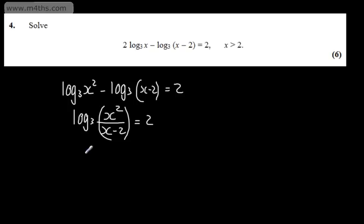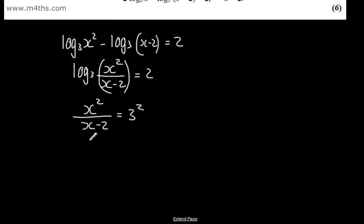Rewriting the exponential equivalent, we can say that x squared over x minus 2 will be equal to 3 to the power of 2. Multiplying both sides by the x minus 2, we have x squared is equal now to 3 to the power of 2, which is 9, then we're going to have x minus 2.